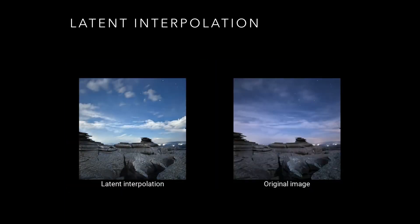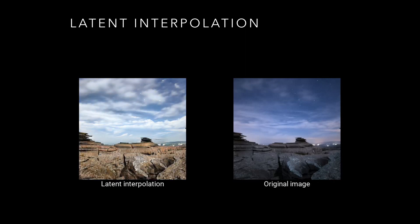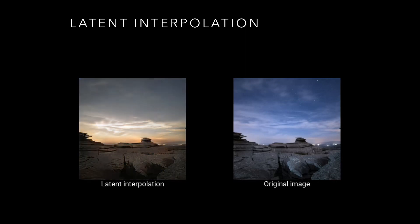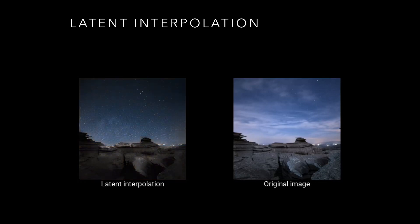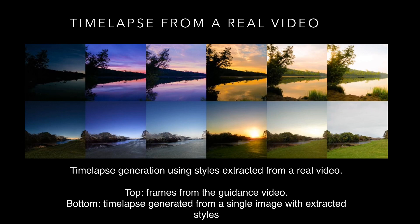We demonstrate style interpolation by linearly interpolating between two style codes extracted from different images. These images showcase style swapping between two images; the trained model copes with exchanging style while preserving content. The proposed approach may also be used to generate static time lapses from a single image, using either an external video as guidance or a predefined continuous trajectory from the latent style space. Note that modeling object motion is out of scope for the present paper.